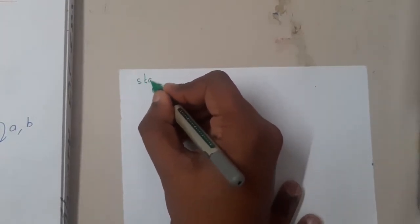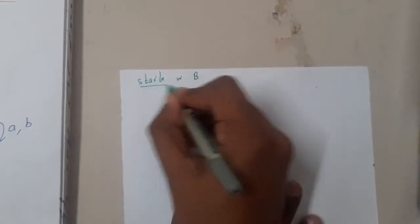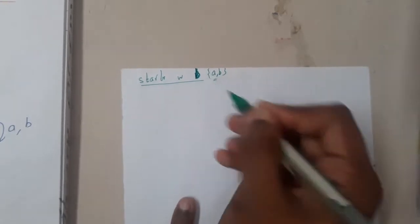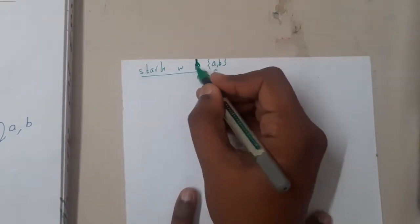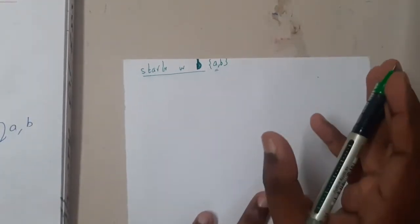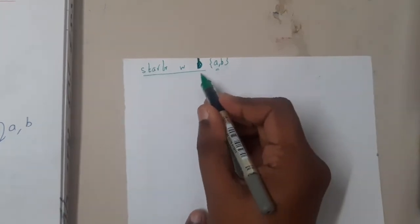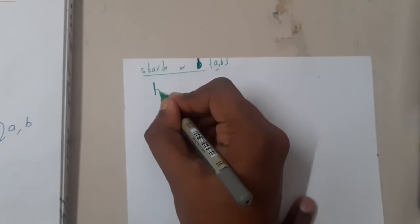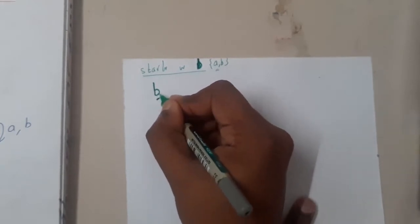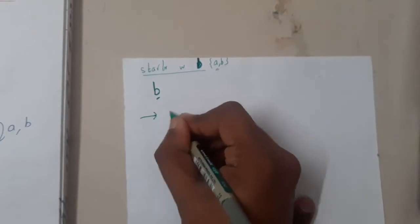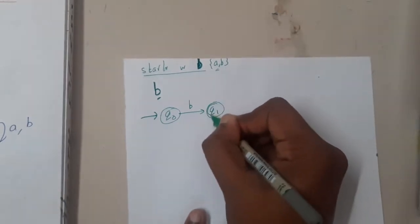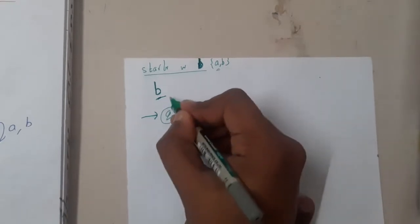The first thing is starting with 'b'. For all questions, I will be assuming {a, b} as our set of alphabets. Whenever we want to start with 'b', after 'b' there could be anything, so the smallest string possible is 'ab'. First draw the start state - from the start state if I find 'b' I will go to this path, and now this is my final state, as 'ab' is the only thing I want to accept.